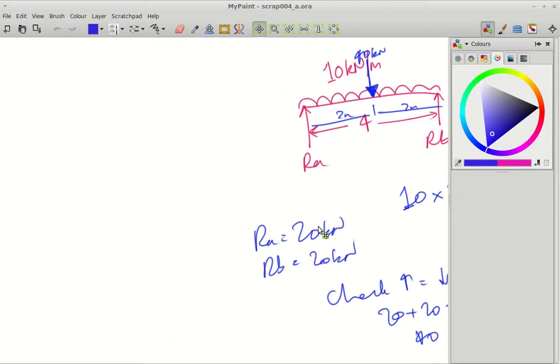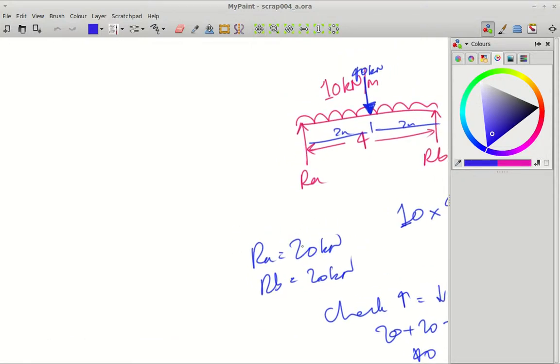Right, let's just draw a shear force diagram for this beam here. Let's just quickly sketch it out again. So I've got Ra is 20, we've got a UDL, and then Rb is 20.